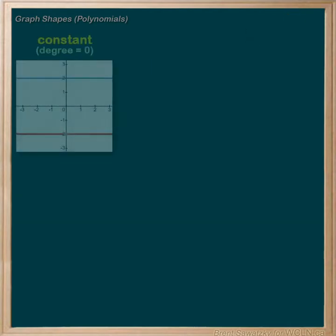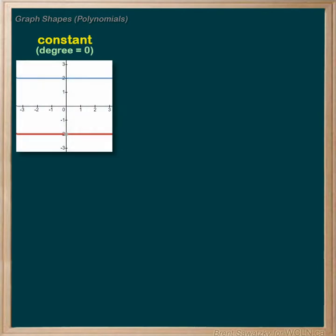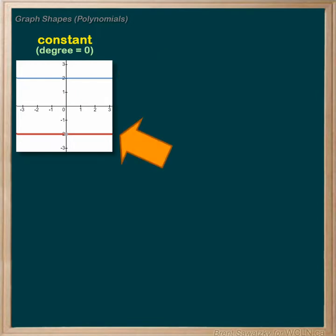The most basic polynomial is a constant — only one term and no variables. So it's just a number. And with no variables, it also has a degree of zero. Its graph looks like this: positive in blue and negative in red. It's just reflected vertically with the negative.